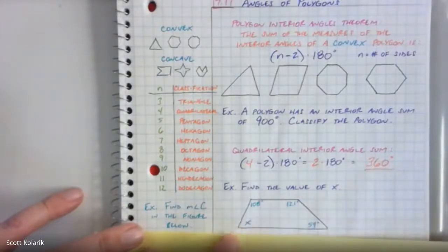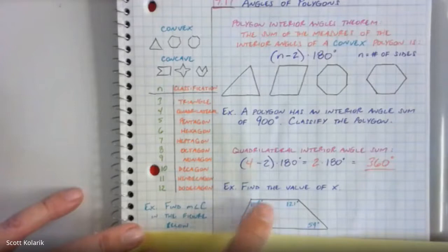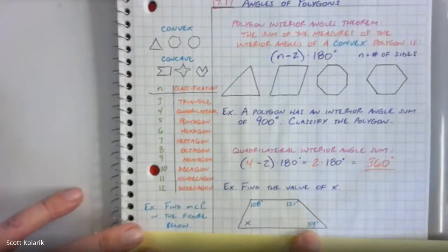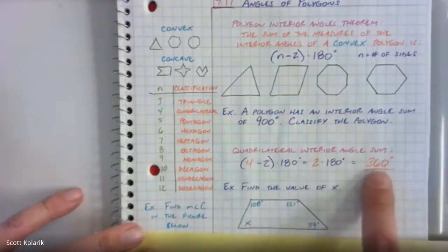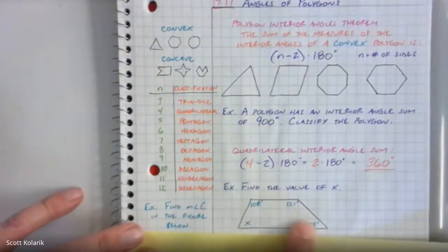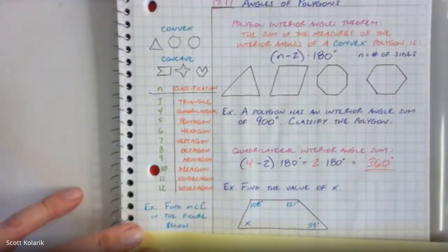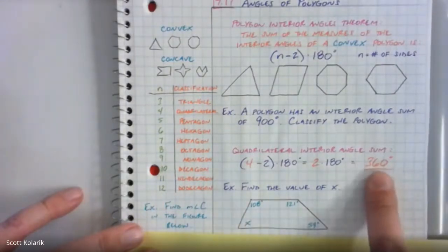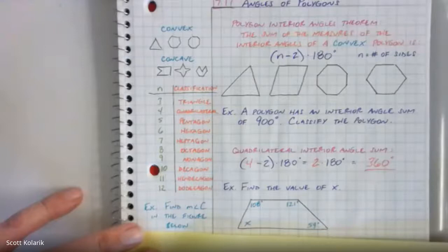If asked to solve for x in a quadrilateral, add up all four angles — for example, x + 108 + 121 + 59 — and set the sum equal to 360. Some problems may have variables in multiple corners; just combine like terms and solve with regular algebra.